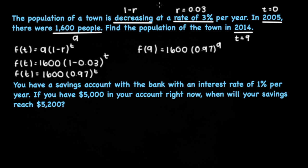Same thing. We can start by noting what the problem says. We have an interest rate of 1%. We have $5,000 in our bank account right now. And we want to know when our savings is equal to $5,200.